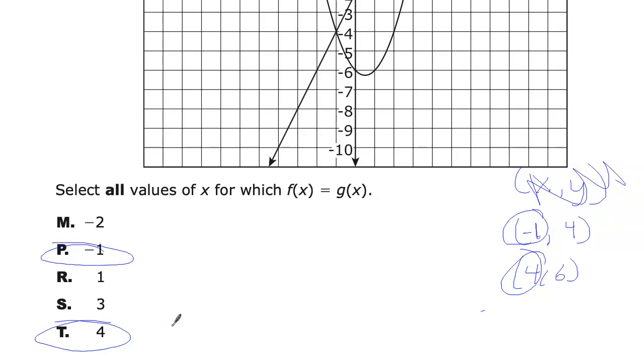So a couple things to remember. If we're looking for where two functions are equal, we need to look where they intersect. And then also we need to pay close attention to whether they want the x value or the y value. For some reason, they generally want the x value, but occasionally not, so just be prepared to give them what they want.